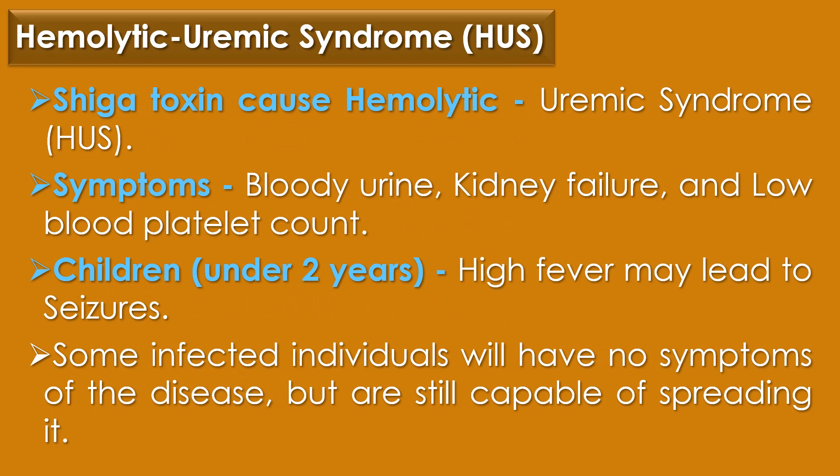The second clinical disease caused by Shigella species is Hemolytic Uremic Syndrome, in short form called HUS. Shiga toxin produced by Shigella dysenteriae can cause Hemolytic Uremic Syndrome. Symptoms include bloody urine, kidney failure, and low blood platelet count, which helps to clot the blood. In children under 2 years of age, high fever may lead to seizures. Some infected individuals will not have any symptoms of disease but are still capable of spreading the disease.